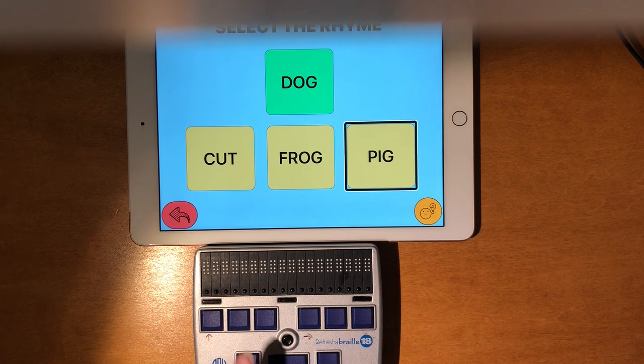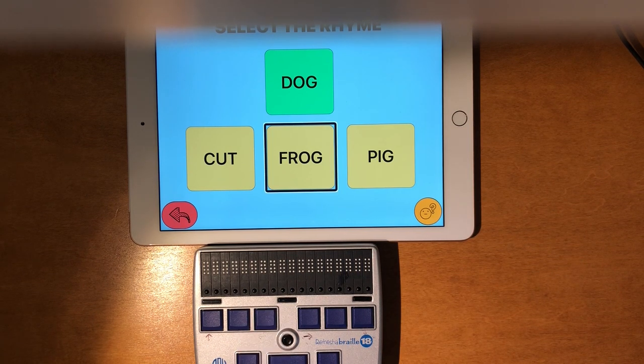So I want to go back to frog. So I'm going to use one space. Frog. Button.